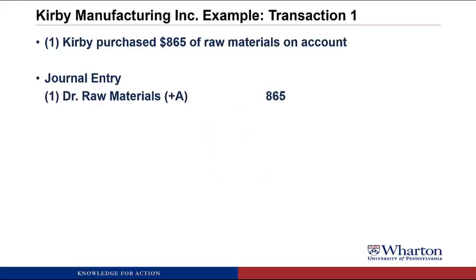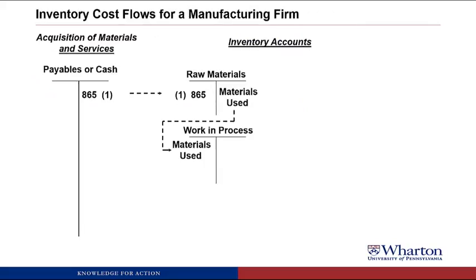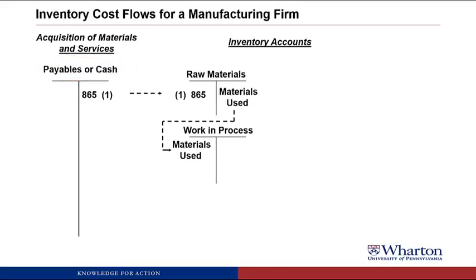The answer is that we're going to debit Raw Materials for $865. Raw materials is an asset, so we make it go up with a debit. We credit Accounts Payable liability for $865 — it's a liability; we owe our suppliers money, so we make that go up with a credit. Then we post this to T-accounts. For simplicity I'm using one general payables/cash T-account instead of separate accounts, because I really want the focus to be on the inventory accounts.